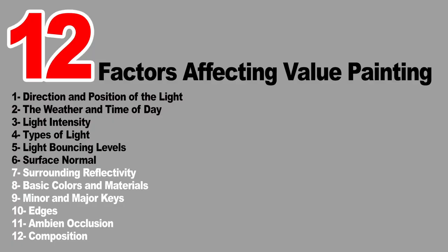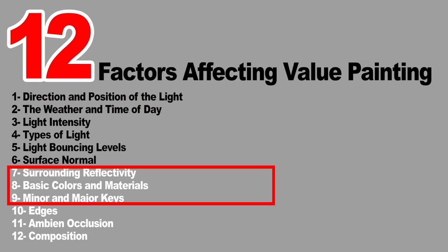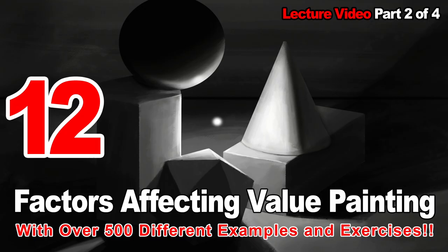These factors were a bit shorter than the others. I should probably have included three more with them, but since I already said there would be 4 parts, I'll stop here so as not to confuse everyone. In the next video, we're going to talk about three other factors that affect value: the surrounding reflectivity, the basic values and materials, and the minor and major key values. No homework or outro in this part — we'll do all that in the final part. This is it for the second part of lesson 2. See you in part 3.